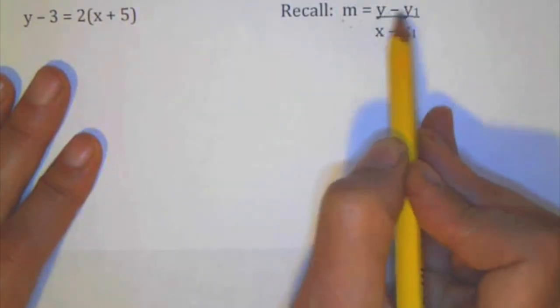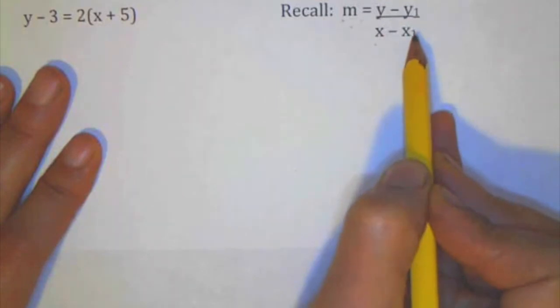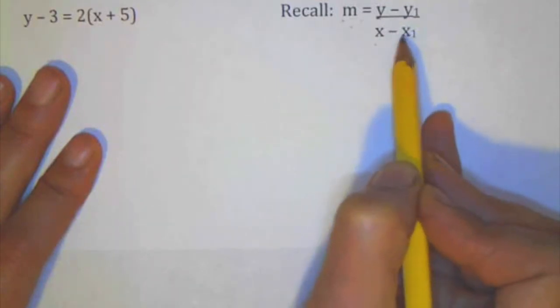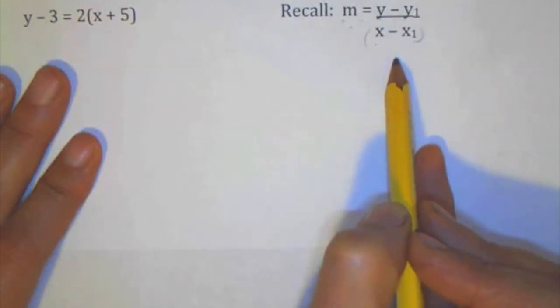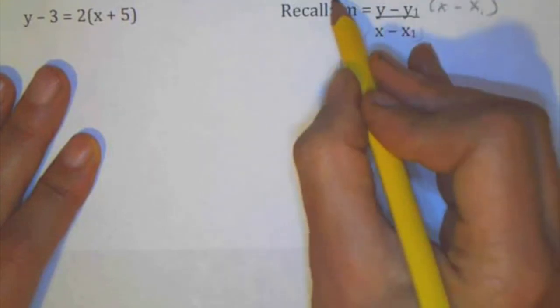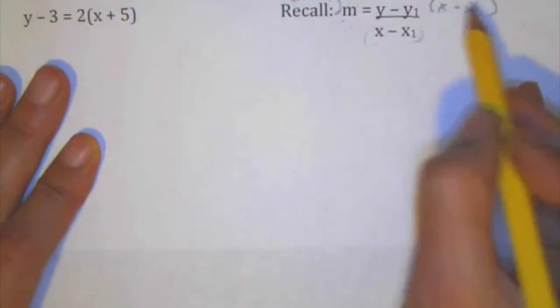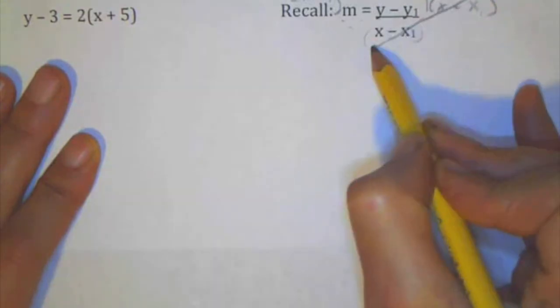And instead of putting y1, y2, I just labeled it as point x, y, and point, like the first point, like x1, y1. I can kind of multiply both sides by x minus, if I do this, x minus x1, and do it to this other side, x minus x1.